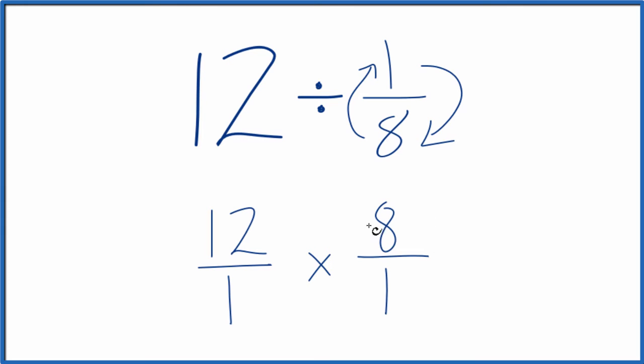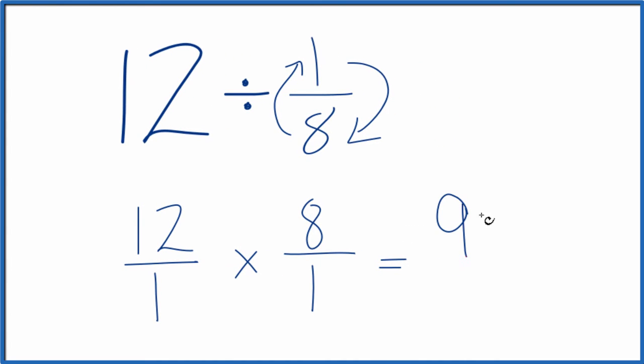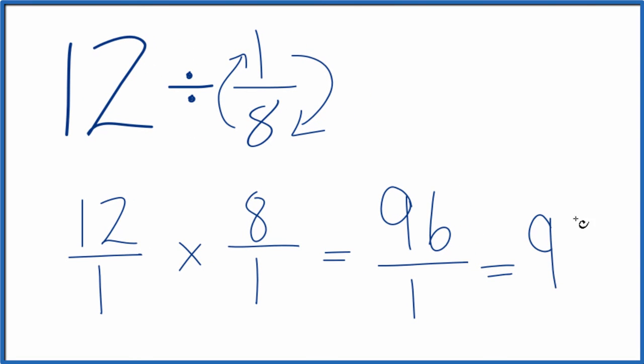Now with fractions, we just multiply the numerators and then the denominators. 12 times 8, that's 96. 1 times 1 is 1. And 96 over 1, we're just dividing by 1, so that's 96.